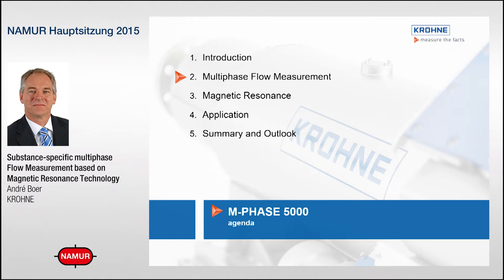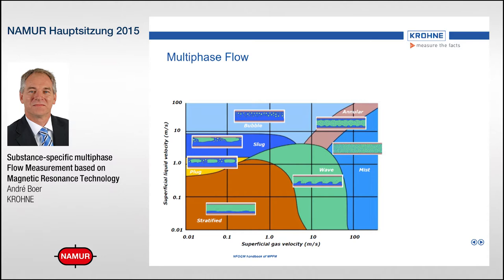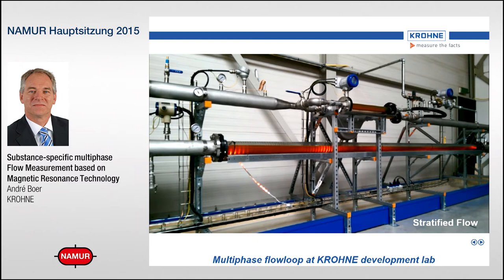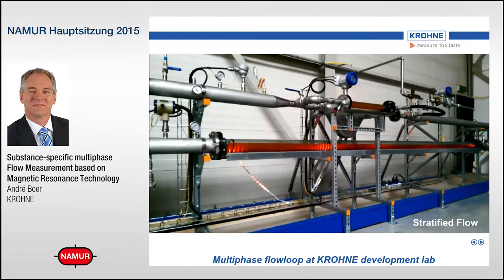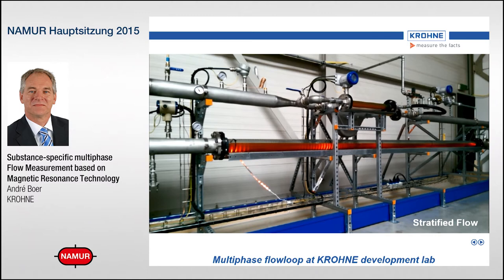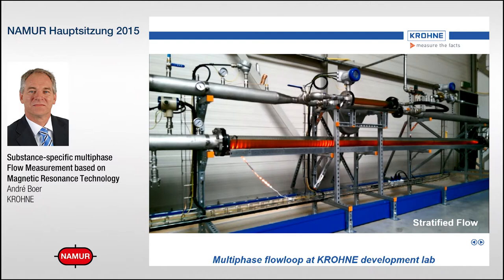Before we go on, I'd like to tell you a little bit more about multiphase flow measurement itself. If you look at multiphase flow, it is often depicted in a graph where on the vertical axis you see the superficial liquid velocity and on the horizontal axis the superficial gas velocity. Depending on the individual velocities of the liquid and the gas, a certain flow regime can occur. Let's start with the stratified flow regime, typically present when flow velocities are quite low. At our factory in Dordrecht, Holland, we have built a small calibration rig capable of demonstrating these individual flow regimes in a multiphase area.